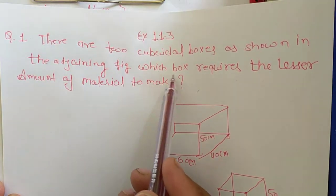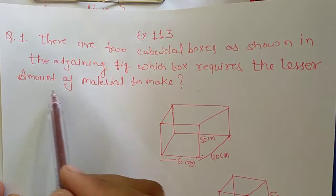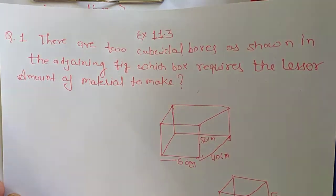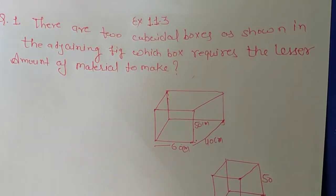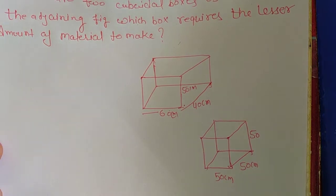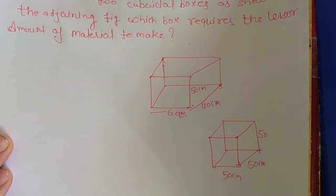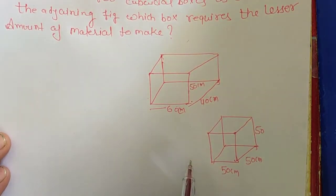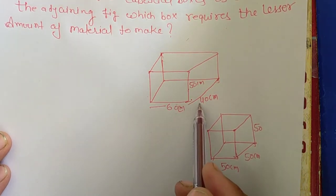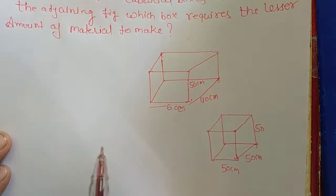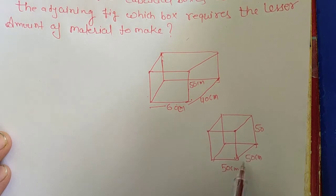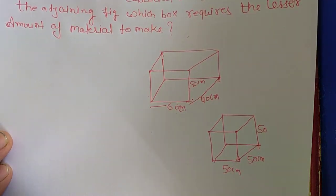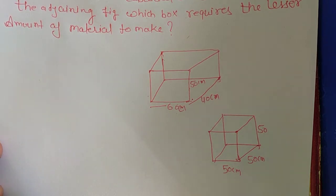The adjoining figure, which box requires the lesser amount of material to make? Here you have two cuboidal boxes: first box and second box. First box is 60 cm, 40 cm, and 50 cm. Second box is 50-50-50. Which box requires the lesser amount? This is the amount of quantity.